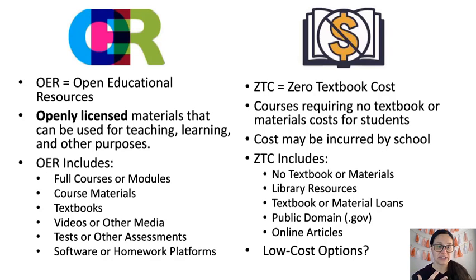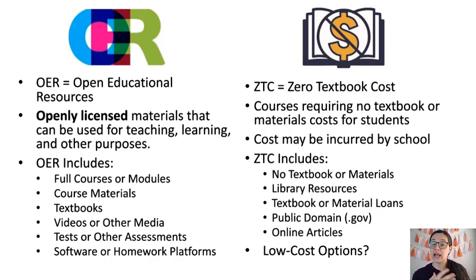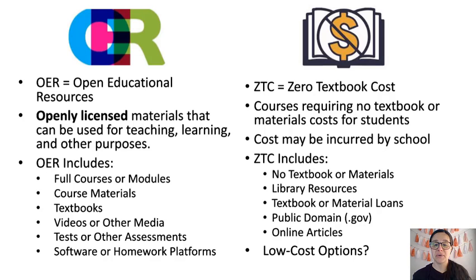ZTC includes classes that function based on completely open resources, but it can also include classes where there are no textbooks or materials — where the faculty has integrated all elements into the course, or there simply isn't a need for materials. It can include library resources, where the school pays for access to journals but the student has no cost. It could also have a textbook loan system where a library keeps copies on hand for students each semester at no cost to them. Additionally, public domain materials — anything from a .gov site put out by our government — are free and available for educational purposes.